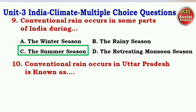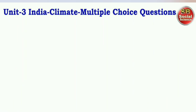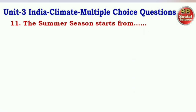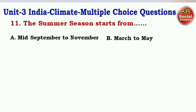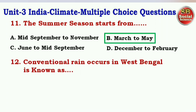Next question: The conventional rain that occurs in Uttar Pradesh is known as — options are Andhi, Kala Baisakhi, Coffee Blossom, Mango Showers. The right answer is option A — Andhi. Next question: The summer season starts from — options are mid-September to November, March to May, June to mid-September, December to February. The right answer is option B — March to May.